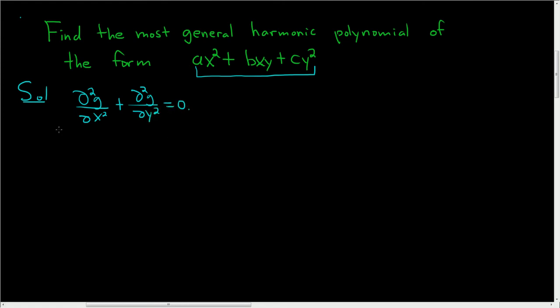All right, so we'll start by giving this a name. Let's call it u. So set u of xy equal to ax squared plus bxy plus cy squared.